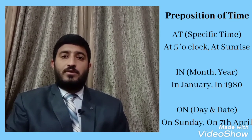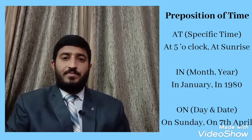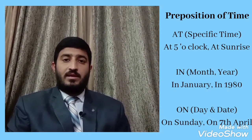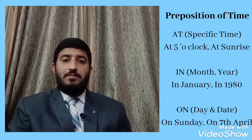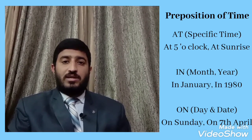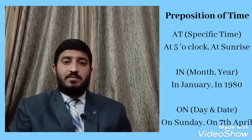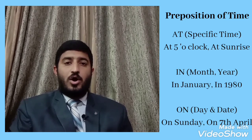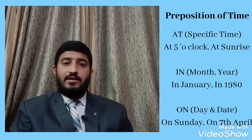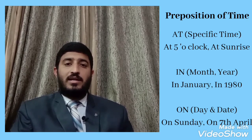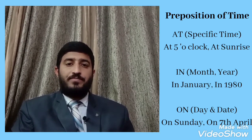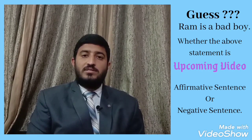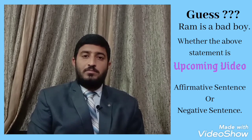Earlier, while discussing 'when,' we used 'at,' 'in,' and 'on.' Here is why: 'at' is used for specific times, like 'at 5 o'clock,' 'at sunrise,' 'at dinner time.' 'In' is used for longer time periods, like 'in January,' 'in summer season,' 'in old days.' 'On' is used for days and dates, like 'on Sunday,' 'on Monday,' 'on 24th January.' These are called prepositions of time.